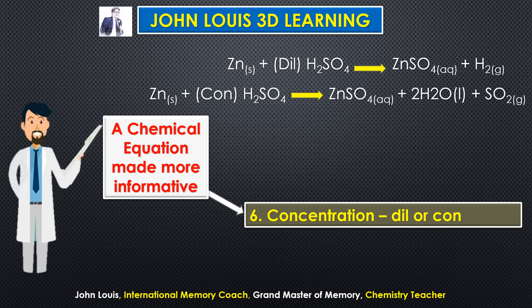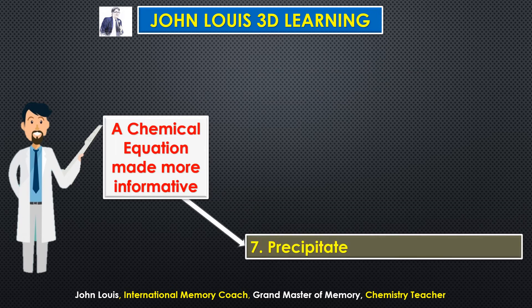To understand dilute versus concentrated: sometimes in coffee we get more than enough sugar — that is highly concentrated with sugar. Sometimes the sugar is insufficient — that means dilute, where the concentration of sugar is less. So concentration can be mentioned along with the chemical equation to make it more informative.